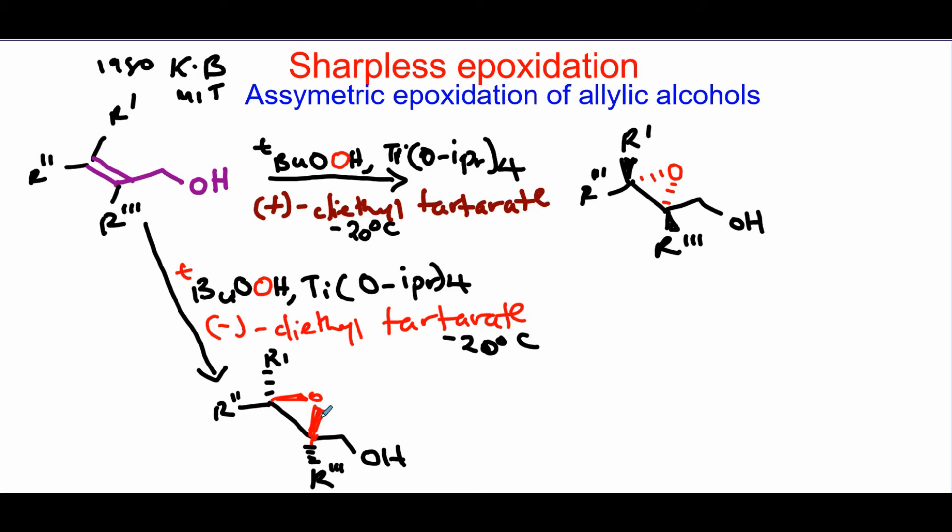So it gives you some kind of resolution. You could resolve for one of the enantiomers just by switching the type of chiral ligand that you're using. Where does the oxygen come from?